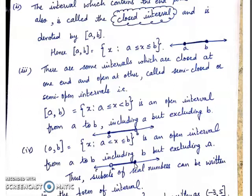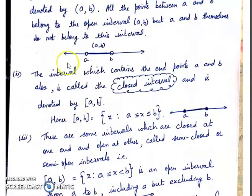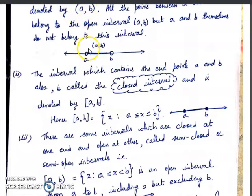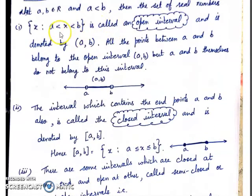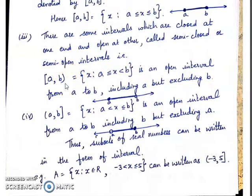To summarize: when endpoints are included, we use rectangular brackets and write less than or equal to (≤) in roster form. When endpoints are not included, we use small brackets and write strict inequality. When the interval is open at one end, the included side uses ≤ and a rectangular bracket, while the excluded side uses strict inequality and a small bracket.